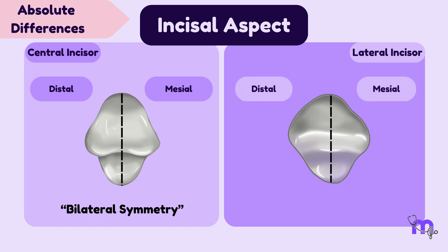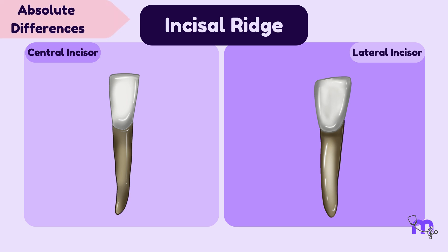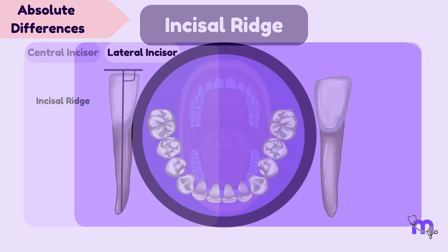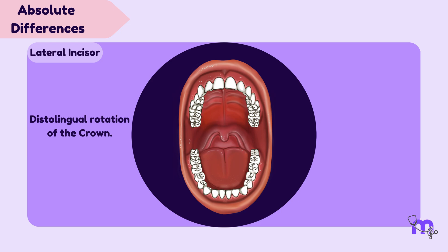Conversely, in the lateral incisor, such bilateral symmetry is not present. In the central incisor, the incisal ridge exhibits a straight orientation that almost forms right angles to the line bisecting the crown. However, in the lateral incisor, the incisal ridge is not straight but rather inclined, and conforms to the curvature of the mandibular dental arch. This results in a subtle appearance of the incisal ridge of the mandibular lateral incisor appearing slightly twisted on its root base, a feature attributed to the distal lingual rotation of the crown.